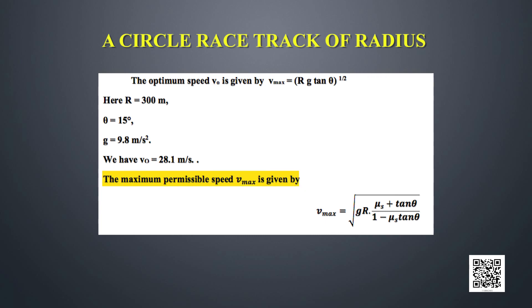Including friction, the maximum permissible speed is v_max = √[g·r·(μ_s + tanθ) / (1 − μ_s · tanθ)], where μ_s = 0.2. Using the known values gives v_max = 38.1 m/s. So for this track, if the car's speed exceeds 38.1 m/s it will be unsafe; below 38.1 m/s the racing car can safely negotiate the curve.